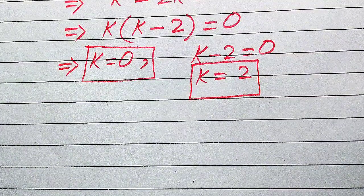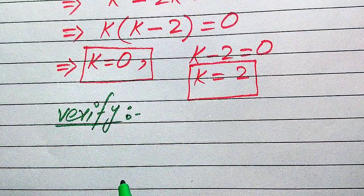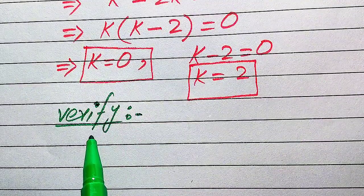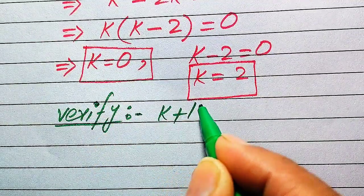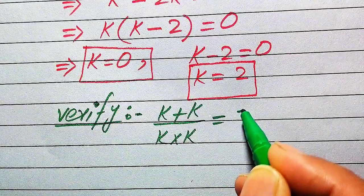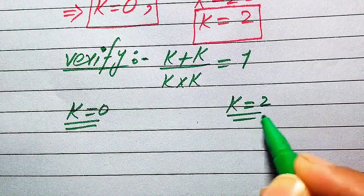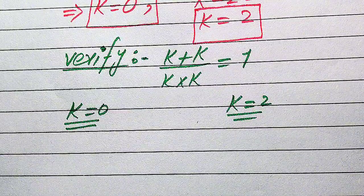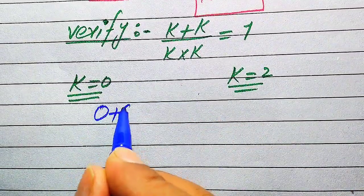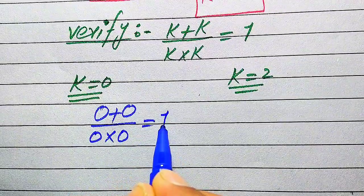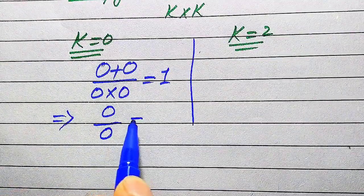In the next step we verify whether both of these values are solutions or extraneous roots of the given equation. We substitute both values into the given equation: k plus k divided by k, multiplied by k, equals 1. On one side we verify k equals 0, and on the other side we verify k equals 2. First we substitute k equals 0 into the left hand side: 0 plus 0 divided by 0, multiplied by 0, equals 1.